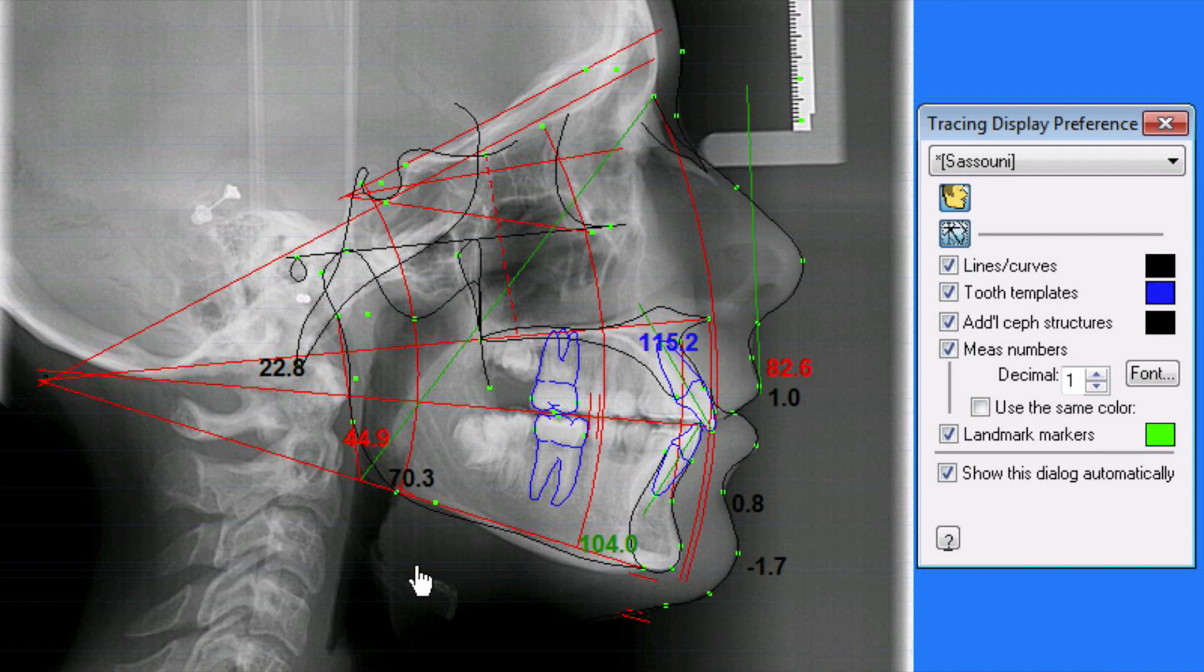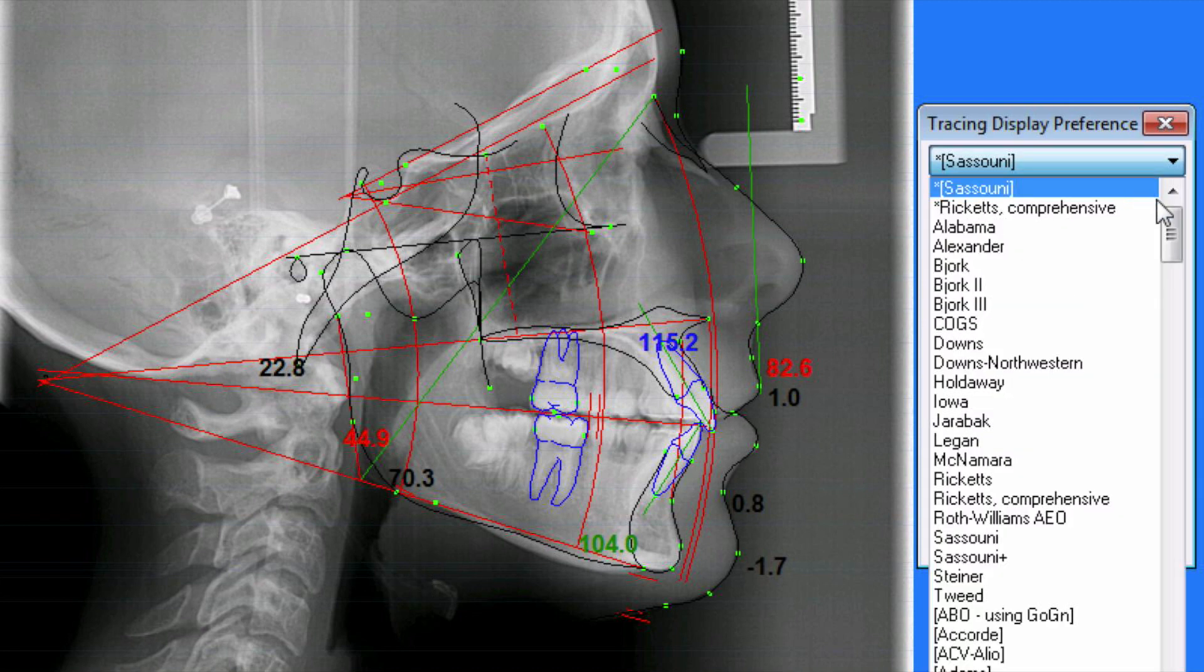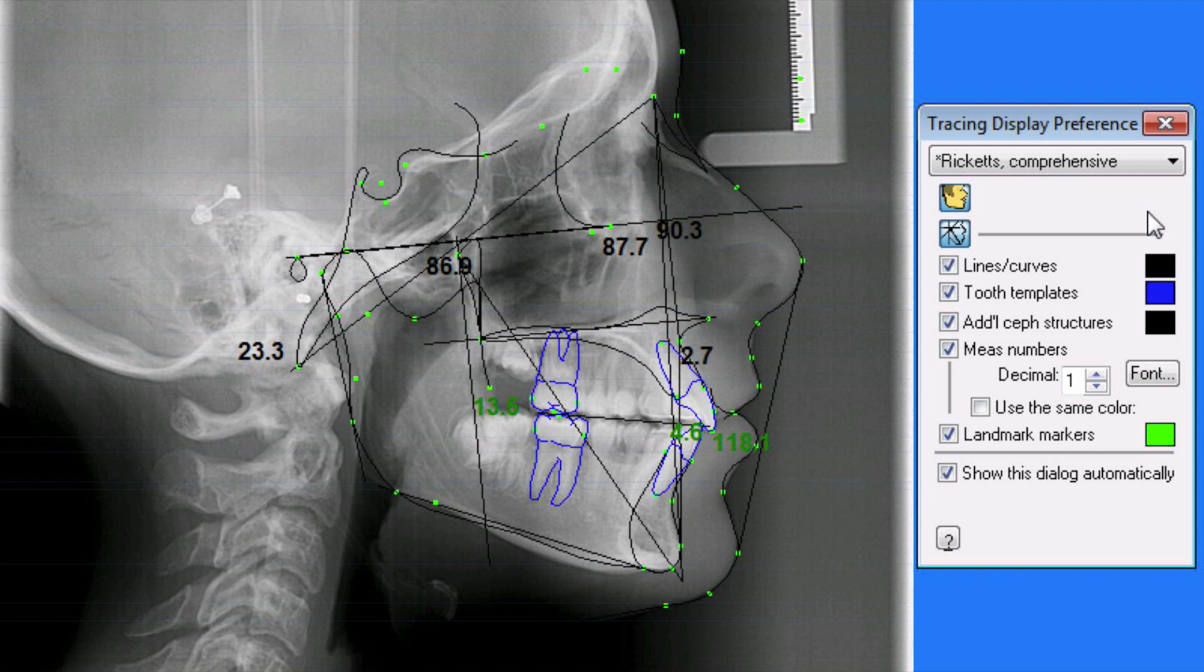This just happens to be the Sasuni one. If you went to school around Pittsburgh, then you're familiar with the Sasuni analysis. And if you like more of a traditional cephalometric tracing, you could use, for example, Ricketts or really anyone, and you'll get the different angles and different information that you need.